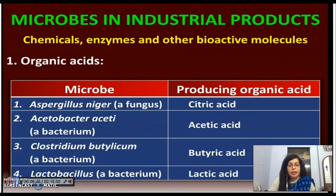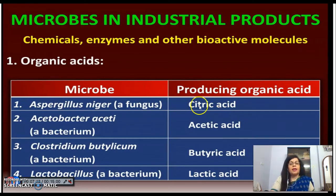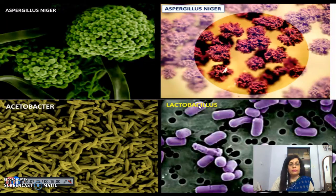These are organic acids made with the help of microorganisms. Aspergillus niger, which is a fungus, produces citric acid. Acetobacter aceti produces acetic acid. Clostridium butylicum produces butyric acid. And Lactobacillus, which is a bacterium, produces lactic acid. All of them are shown in the pictures: Aspergillus niger, Acetobacter, and Lactobacillus.